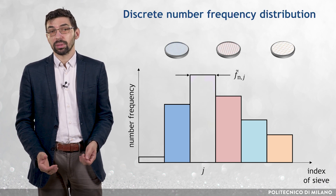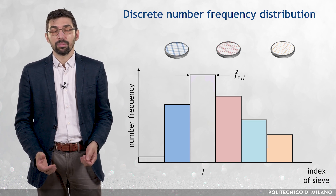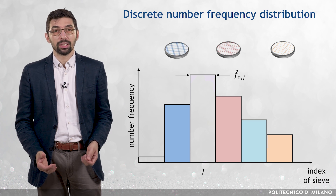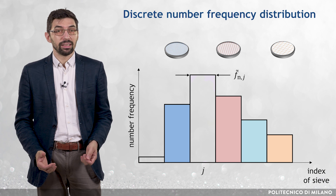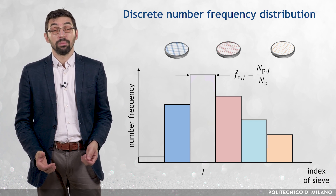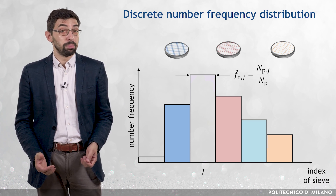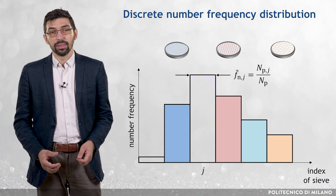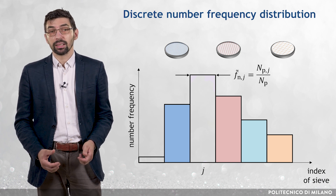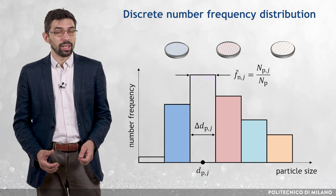From these results, it is possible to build a discrete number frequency distribution — a histogram indicating the relative number of particles in each size interval j, which is called f̃_Nj, and it is defined as the ratio between the number of particles in the interval NPj and the total number of particles in the sample NP. Each sieve is associated with a characteristic size range with midpoint dPj and width ΔdPj.